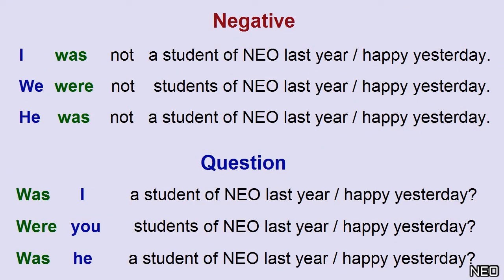Negative: I was not a student last year. We were not students last year. He was not a student last year. Question: Was I a student last year? Were you students last year? Was he a student last year?